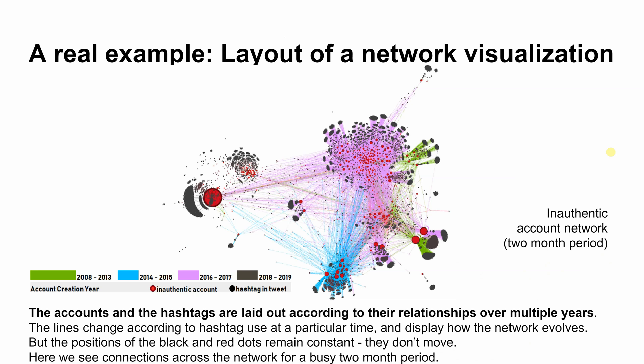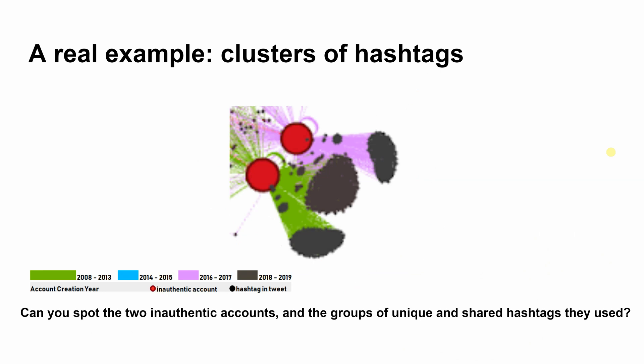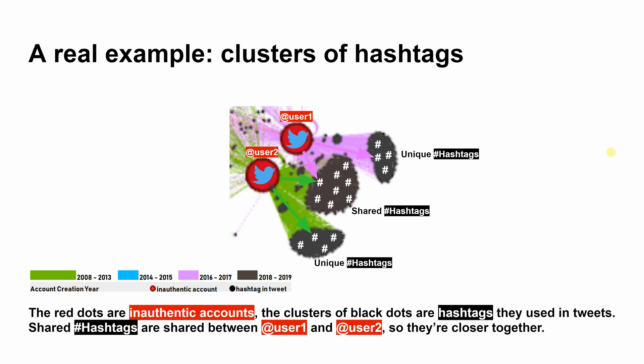Here we see connections across the network for a busy two month period. Let's zoom in and look at how the inauthentic accounts and hashtags — the red and black dots — look in a real network visualization. Can you spot the two inauthentic accounts and the groups of unique and shared hashtags they used? The red dots are inauthentic accounts. The clusters of black dots are hashtags they used in tweets. Shared hashtags are shared between user1 and user2, so they are closer to those users.